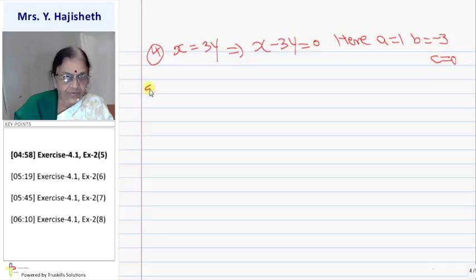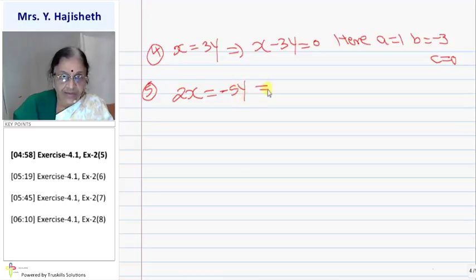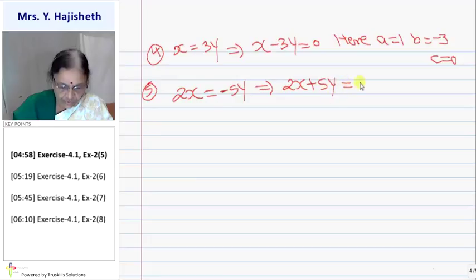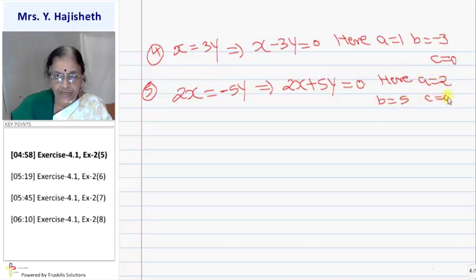Fifth question: they have given two x equals five y. I get it in general form: two x minus five y equals zero. Now it is in standard form. Here a is two, b is minus five and c is zero.